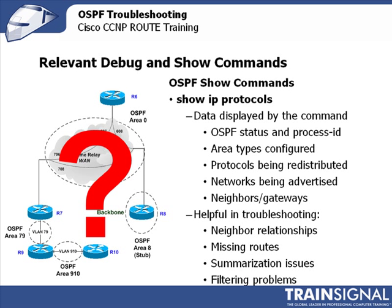It's a much broader show command, but it's still extremely helpful. It can be very helpful in troubleshooting neighbor relationships. For instance, if neighbors or gateways are missing that you're expecting, it'll be able to show you that. Missing routes, problems with summarization, and problems with filtering.